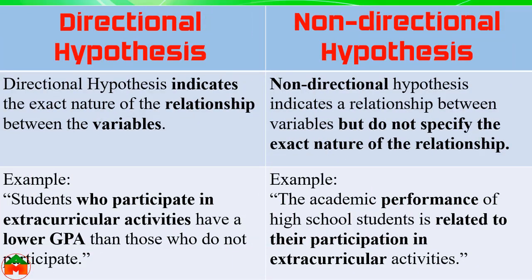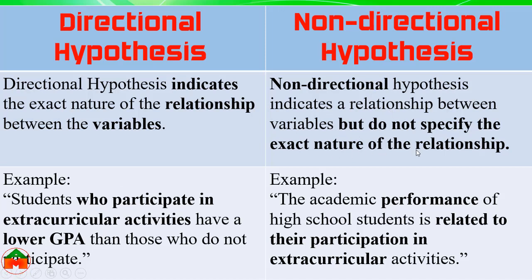Directional Hypothesis indicates the exact nature of the relationship between the variables. On the other hand, Non-Directional Hypothesis indicates a relationship between variables but does not specify the exact nature of the relationship. Example of Directional Hypothesis: students who participate in extracurricular activities have a lower CGPA. Example of Non-Directional Hypothesis: the academic performance of high school students is related to their participation in extracurricular activities — just indicating a relationship without specifying its exact nature.